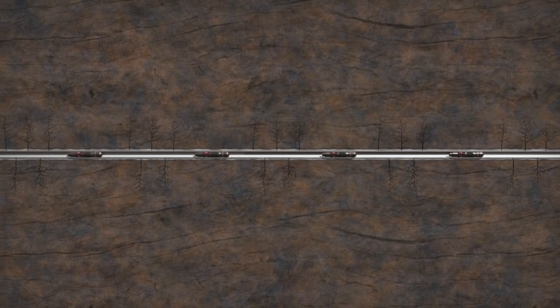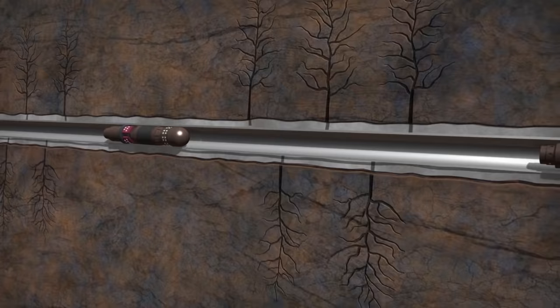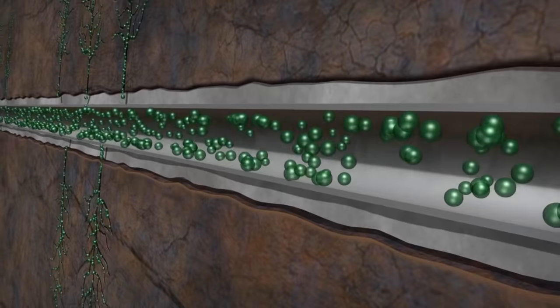Once the multi-stage stimulation is completed, the frack fleet is rigged down and a workover rig is moved in to drill out the plugs, which allows the oil or natural gas to flow up the wellbore.